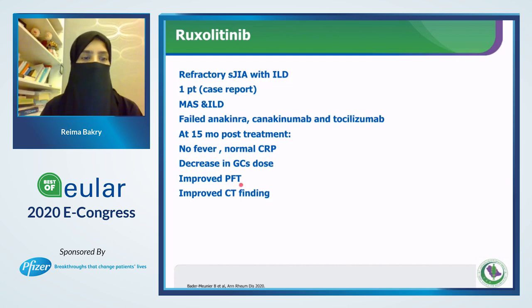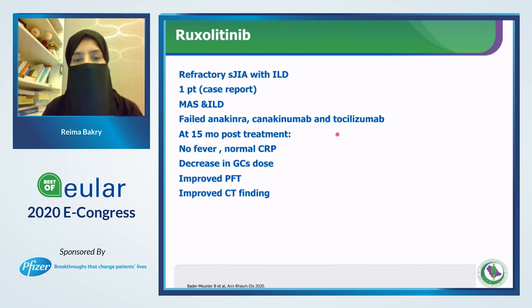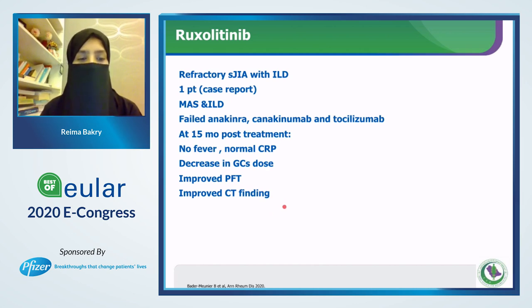A single case report used ruxolitinib for systemic JIA with interstitial lung disease. The patient failed anakinra, canakinumab, and tocilizumab. After 15 months of treatment, inflammatory markers normalized, no fever was present, steroids were decreased, and pulmonary function tests improved with improved CT findings.